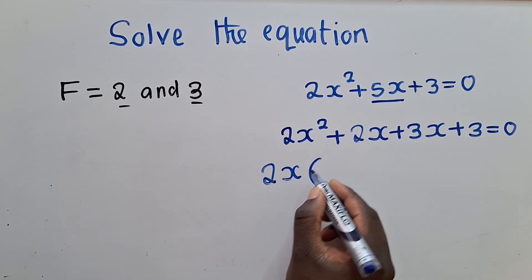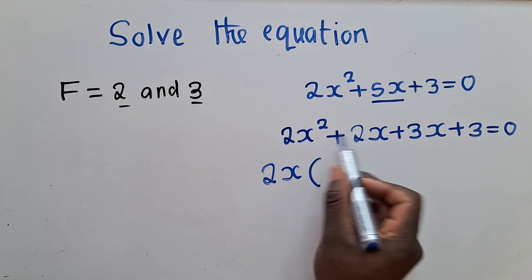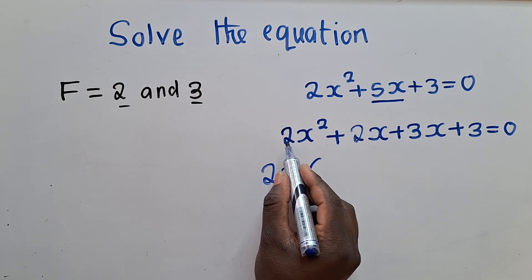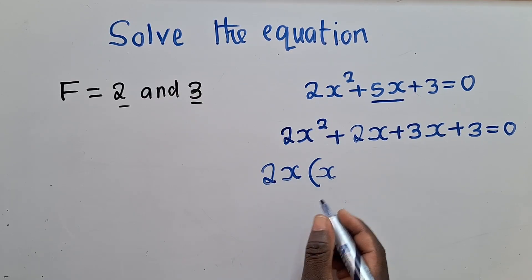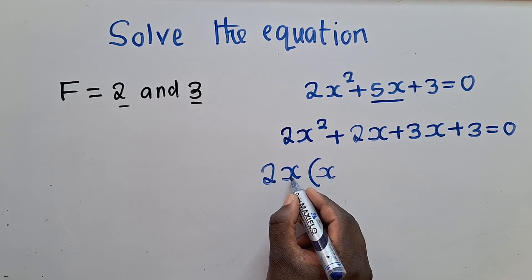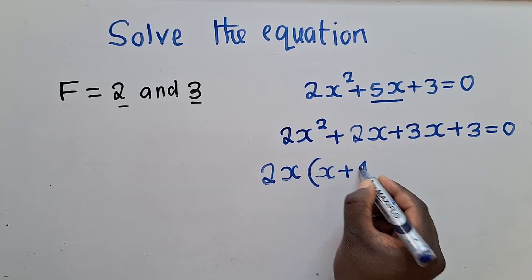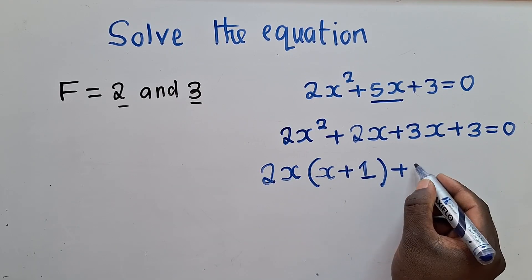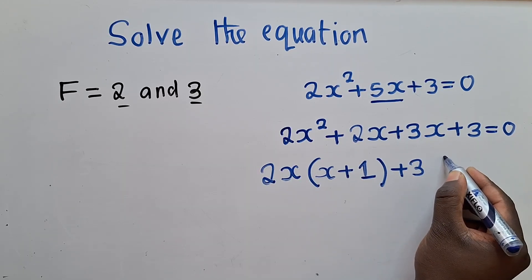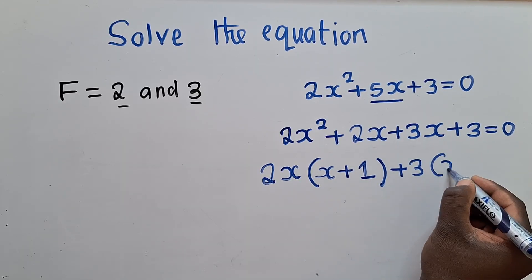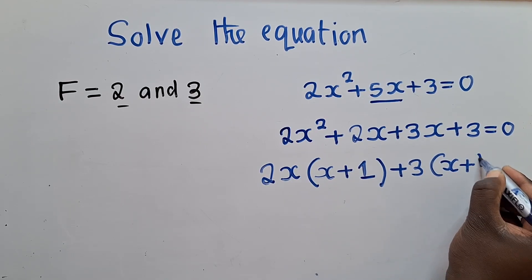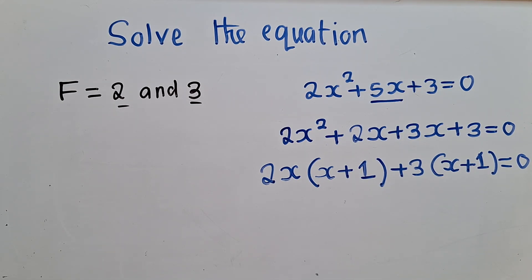Now you start factorizing. In other words, these two terms, you factorize. So you say 2x into 2x power 2, it's x. And then 2x into 2x, it's a 1. You say, what is common here? It's a 3. 3 into 3x, it's x. 3 into 3, it's a 1, which is equal to 0. So you are there.